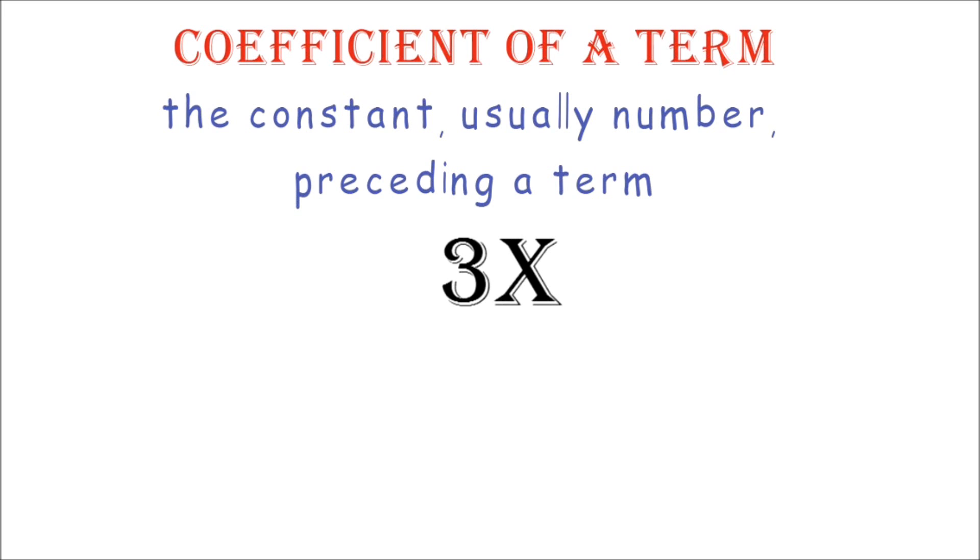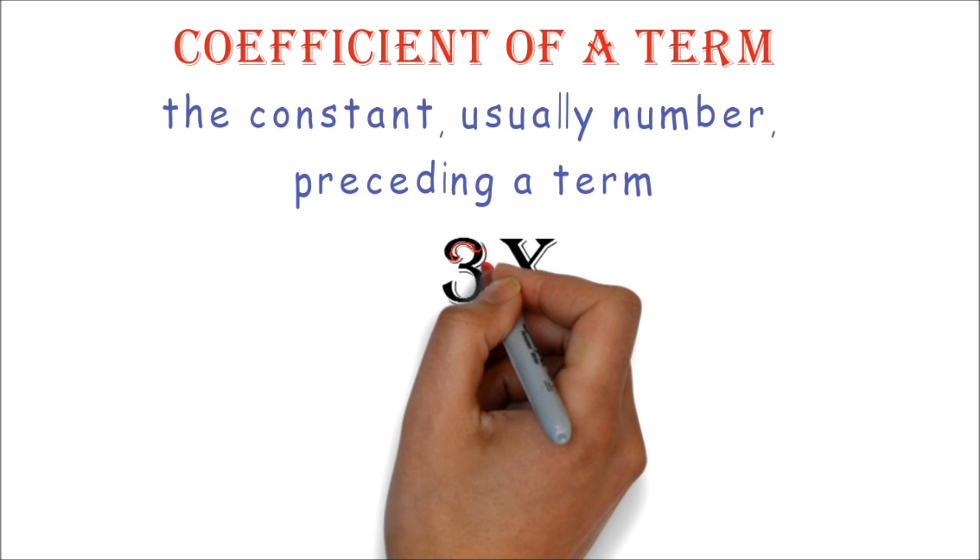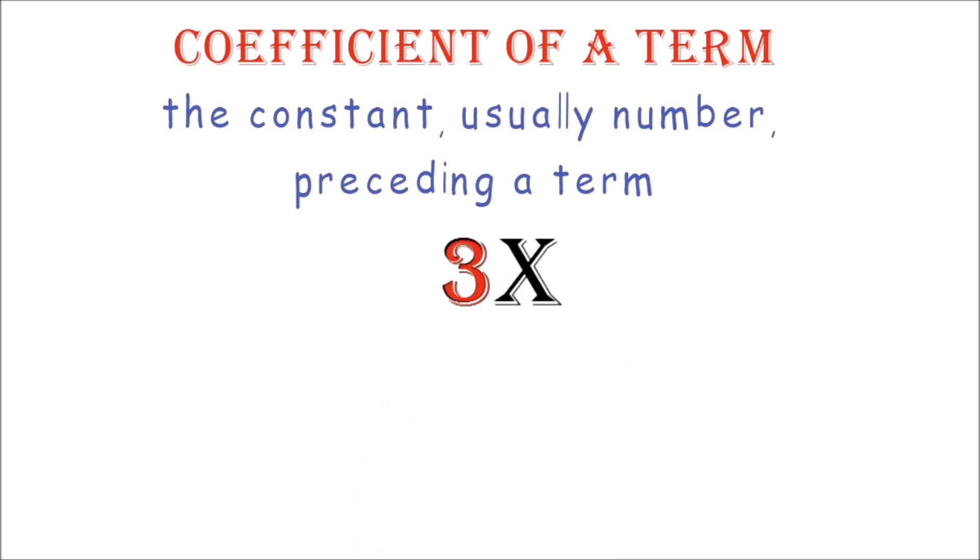Coefficient of a term. Now let's look at the coefficient of a term. The coefficient of a term is the constant, usually number, preceding a term. So far, we have been looking at the variables. Now let's look at the number. If we look at a term 3x, the coefficient is 3 because 3 is the constant preceding the term.